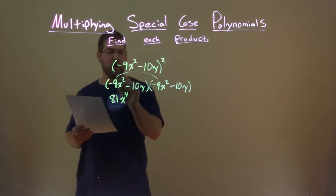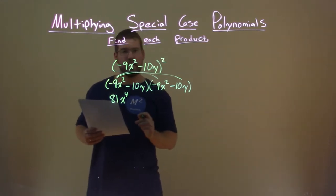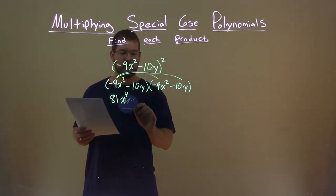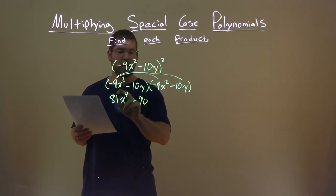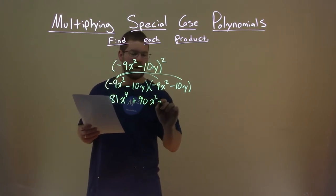Continuing on, negative 9x squared times a minus 10y. Negative times a negative is a positive, 9 times 10 is 90, and we have x squared y.